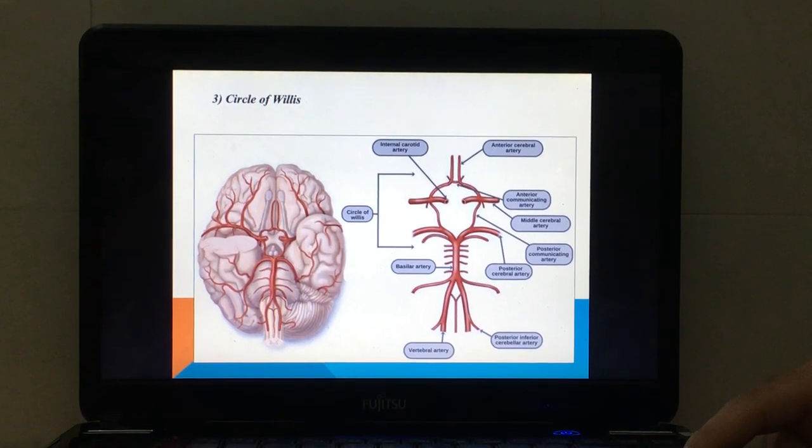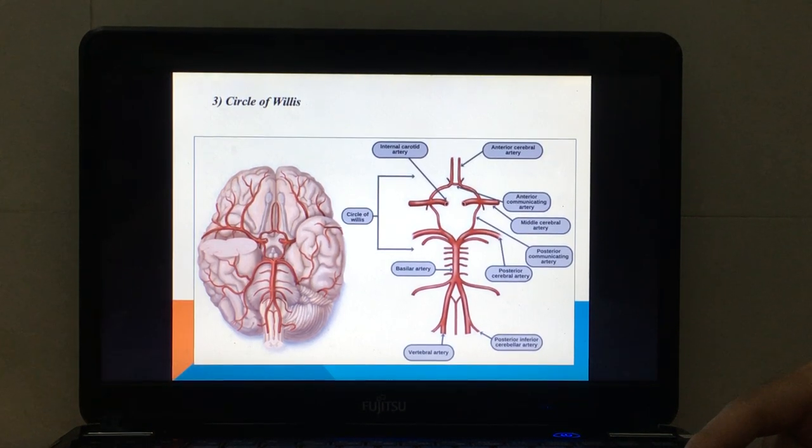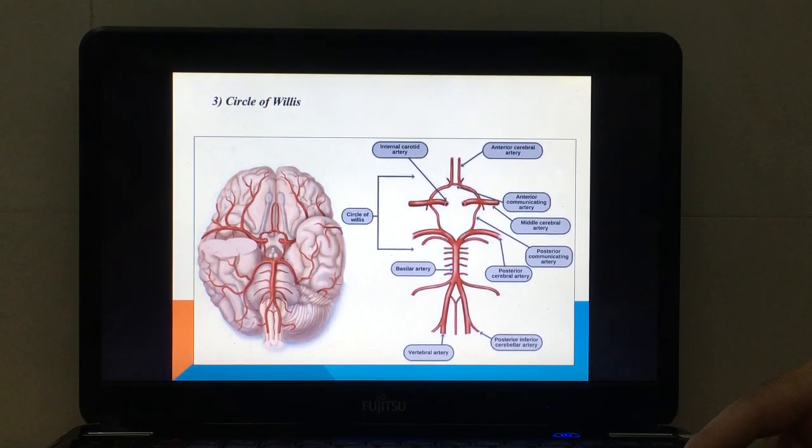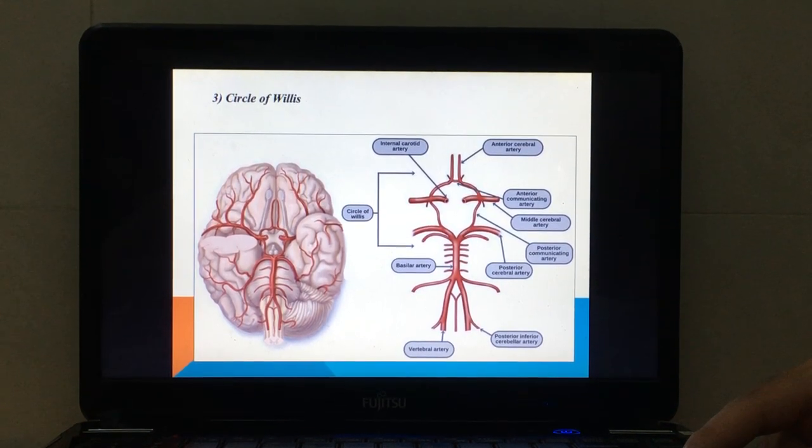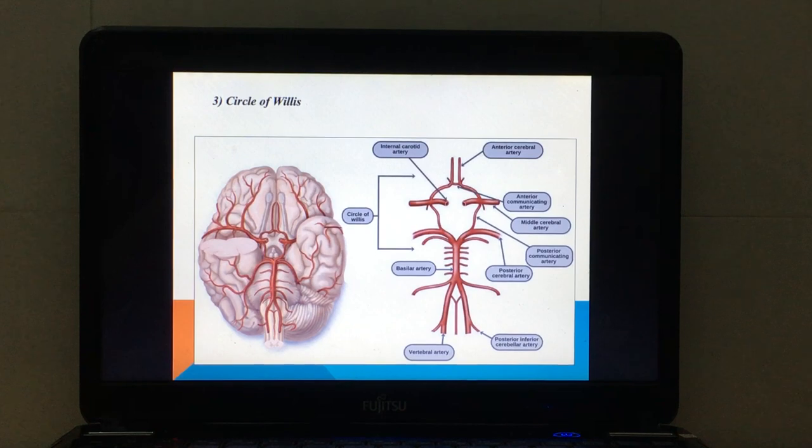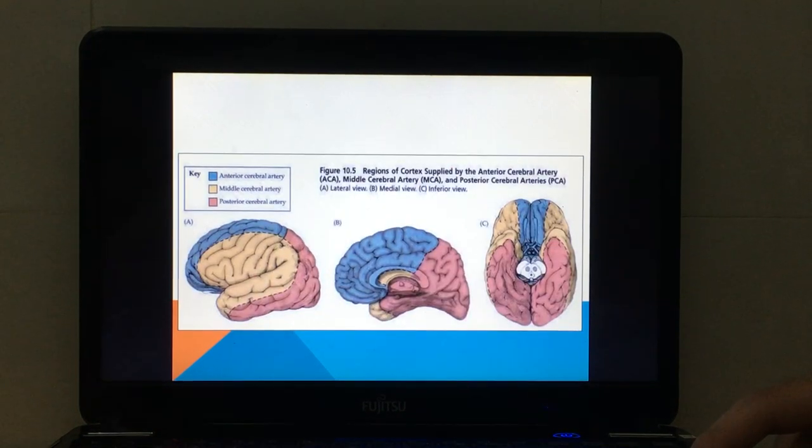The Circle of Willis is the major anastomosis of the cerebral vasculature. That circle includes three main pairs of arteries: the anterior cerebral artery, the posterior communicating artery, and the posterior cerebral artery. The middle cerebral artery just contributes a small part.